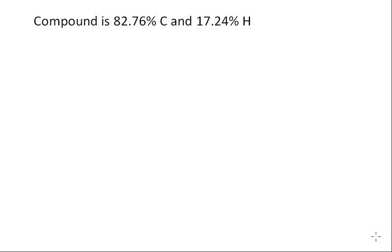If we assume a 100-gram sample, that will make the following math very easy. In a 100-gram sample, we'll have 82.76 grams of carbon, and we'll have 17.24 grams of hydrogen.